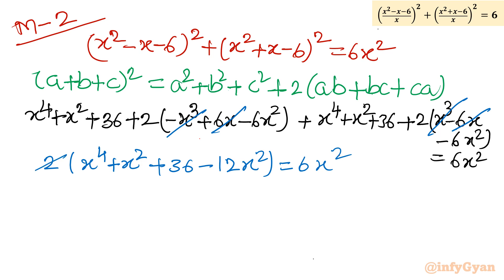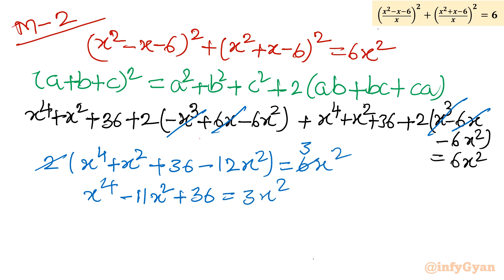Cancelling 2 and 6, I write 3 on the right. So x⁴ - 11x² + 36 = 3x². Moving terms, our final quartic equation is x⁴ - 14x² + 36 = 0.